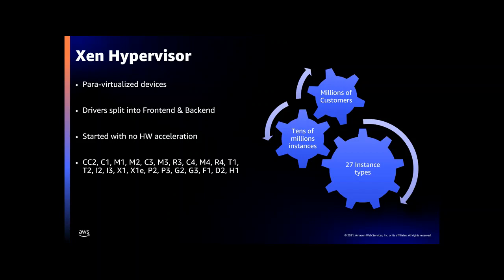Under the hood of all these instances was the Xen hypervisor. Initially the CPUs had no hardware virtualization support, so instances were para-virtualized — in other words, the kernels in those AMIs were built to understand that they were being virtualized and to cooperate with the hypervisor. IO was provided by para-virtualized or PV devices, which are purely software constructs using a split driver model and running entirely on the host CPU. No special hardware offload back then.